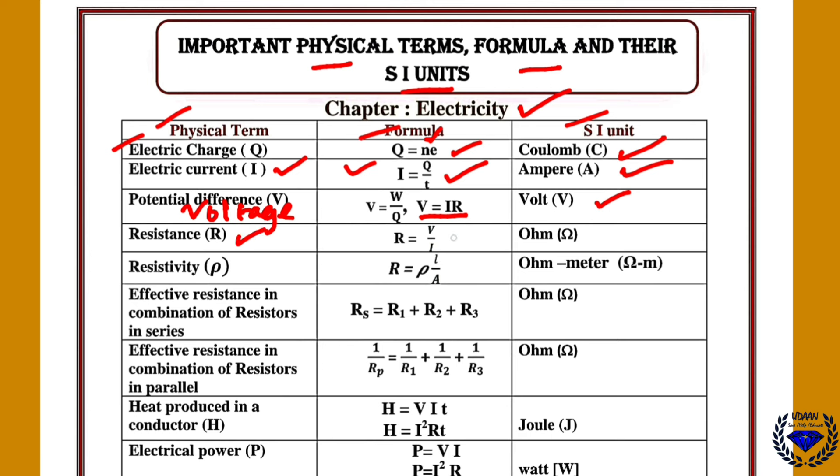Then resistance R is equal to V by I. According to Ohm's law it is Ohm. Or resistivity denoted as rho. In that resistance is R is equal to rho L by A. SI unit of resistivity is Ohm meter. So here L is length and A is area of cross section.